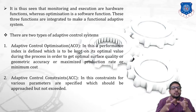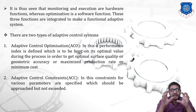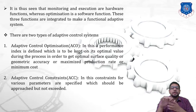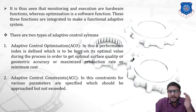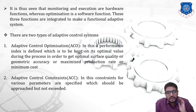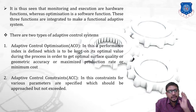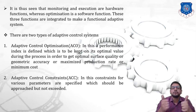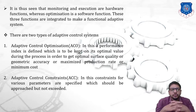The second type is Adaptive Control Constraints, denoted by ACC. In this system, constraints for various parameters — that is, feed, speed, and depth of cut — are specified which should be approached but not exceeded. A predefined limit is given for maximum speed and maximum depth of cut; up to that limit we can approach, but beyond that it will not be exceeded. This is taken care of by the adaptive control constraint system.